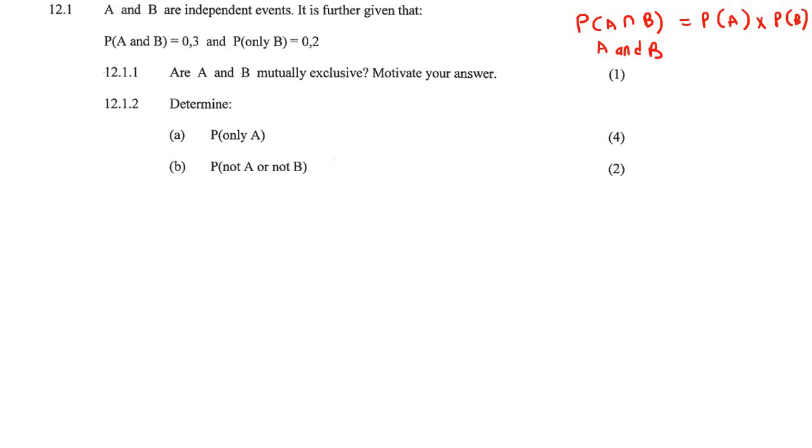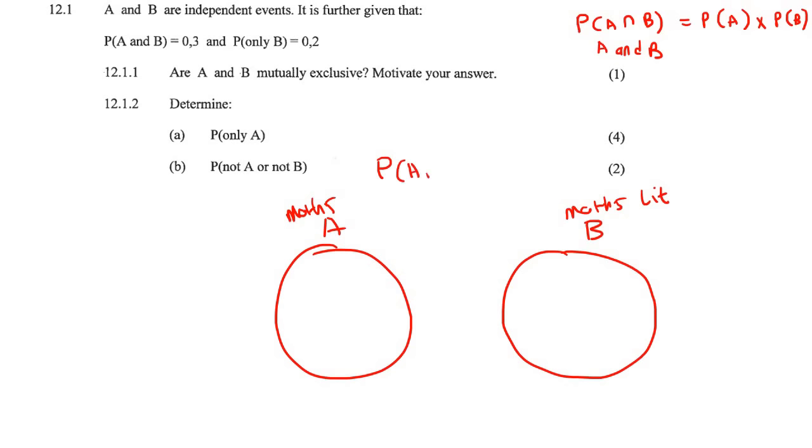So mutually exclusive looks like this on a Venn diagram. So it's like A and B cannot overlap. I've got to use a good example. People at a school who do maths and maths literacy - you can't do both, right? So there will be no people who do both. So this is what mutually exclusive looks like. It means that the probability of A and B will be equal to 0. That is what mutually exclusive means.